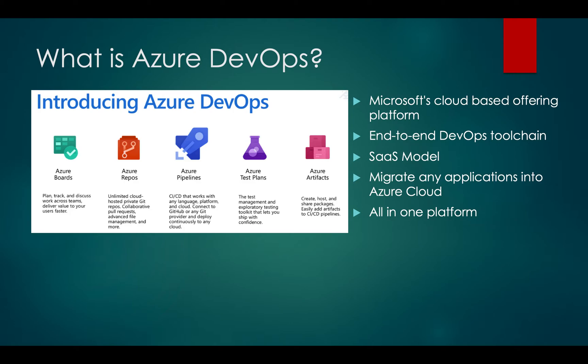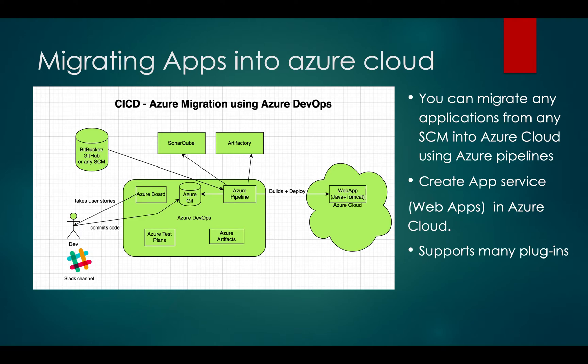So that's the whole end-to-end offering from Azure DevOps — basically an all-in-one platform. Using Azure Pipelines, you can migrate applications from Bitbucket, GitHub, or any other source code management system into Azure cloud.